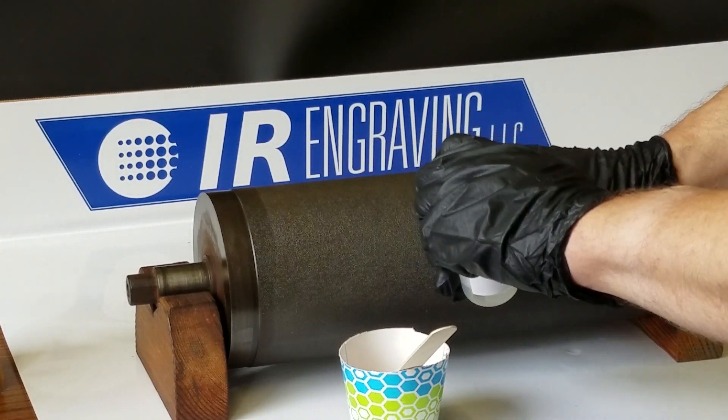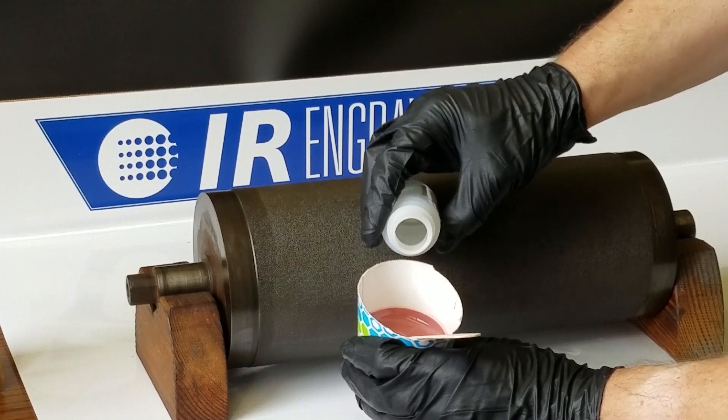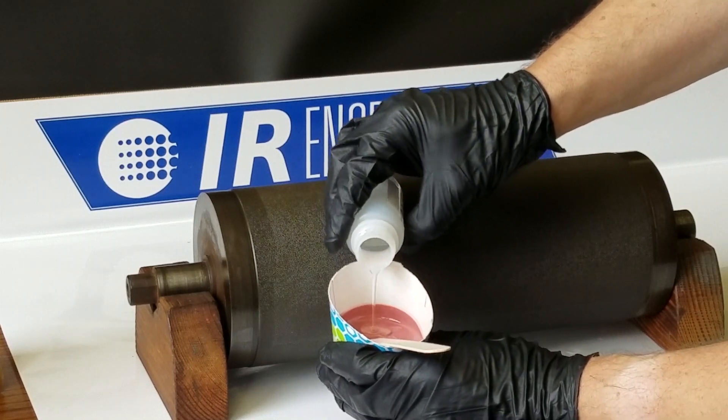Pour a dime-sized or less amount of hardener and mix thoroughly while wiping all sides of the cup and the mixing stick itself.